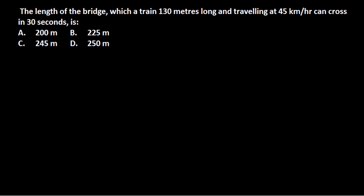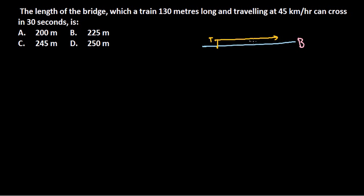The situation here is that a train is crossing a bridge. Let me draw this — here is the bridge and here is the train crossing it. The bridge is standing still, it's not moving, but the train is moving in a particular direction.